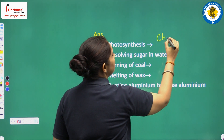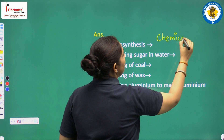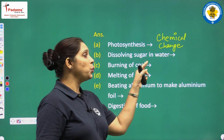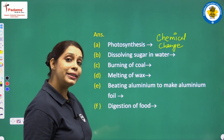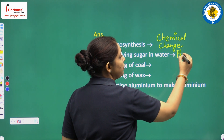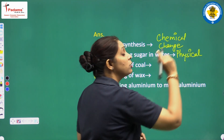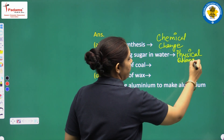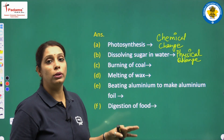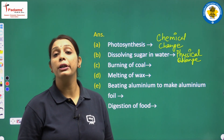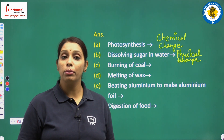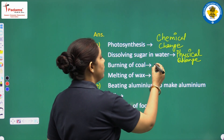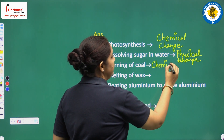We will write here: photosynthesis is a chemical change. Next one — dissolving sugar in water. It is an example of physical change. Next one — burning of coal. Burning of coal, burning of paper, burning of wood — all these are examples of chemical changes. We will write here: it is a chemical change.